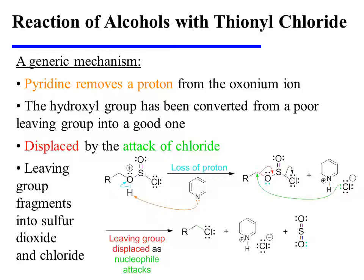The net result of the steps to this point have been to convert the hydroxyl group from a poor leaving group into a good one. And this good leaving group is now displaced by the attack of chloride. As it departs, the leaving group fragments into sulfur dioxide and chloride. Notice that the alkyl chloride, the principal organic reaction product, is formed at this stage.